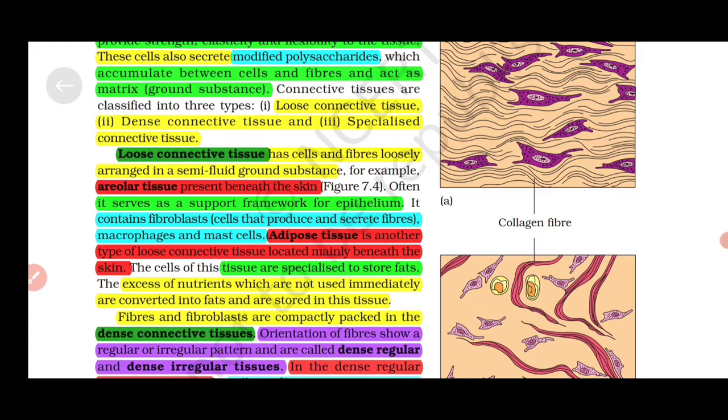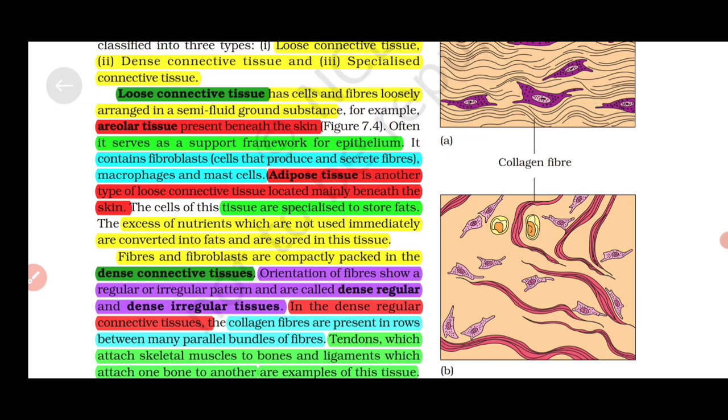Loose connective tissue has cells and fibers loosely arranged in a semi-fluid ground substance. Areolar tissue is present beneath the skin, providing support framework for epithelium. It contains fibroblast cells that produce and secrete fibers, macrophages, and mast cells. Adipose tissue is another type of loose connective tissue located mainly beneath the skin, specialized to store fats. Excess nutrients which are not used immediately are converted into fats and stored in this tissue.